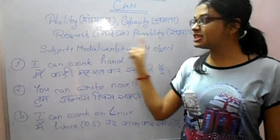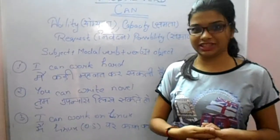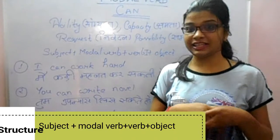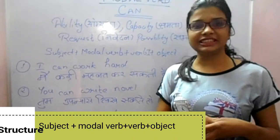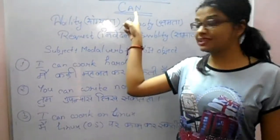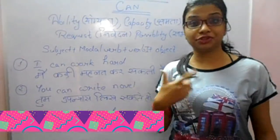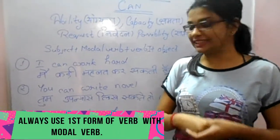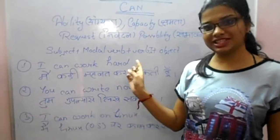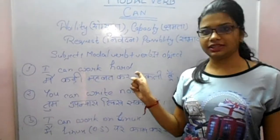The structure of the sentence is: Subject + Modal Verb + Verb + Object. Subject can be I, you, we, they, he, she, or any name. The modal verb we are starting today is 'can'. The verb we have to use is the first form (kriya), and the object will be the remaining portion of the sentence.